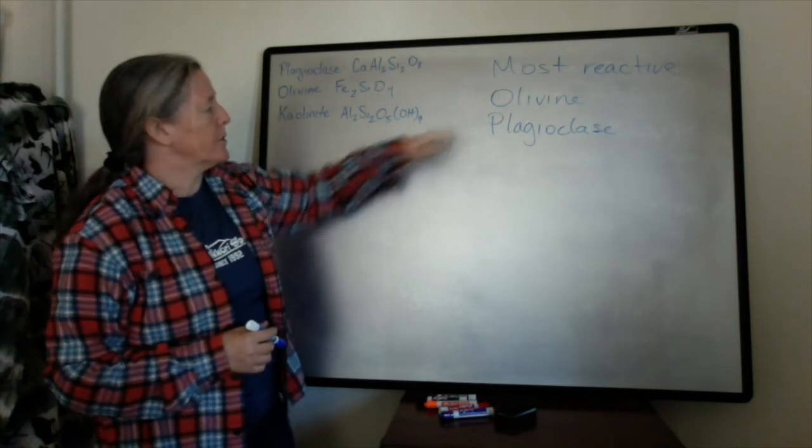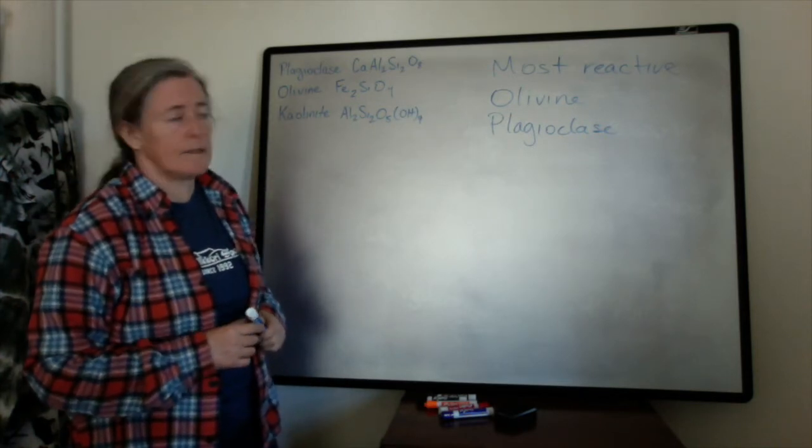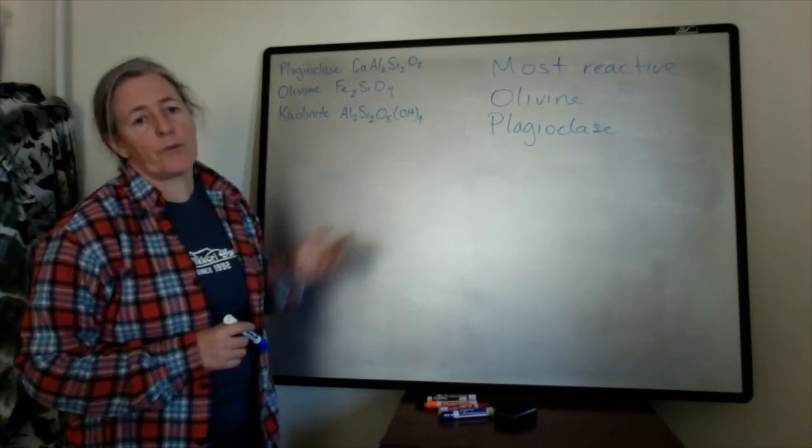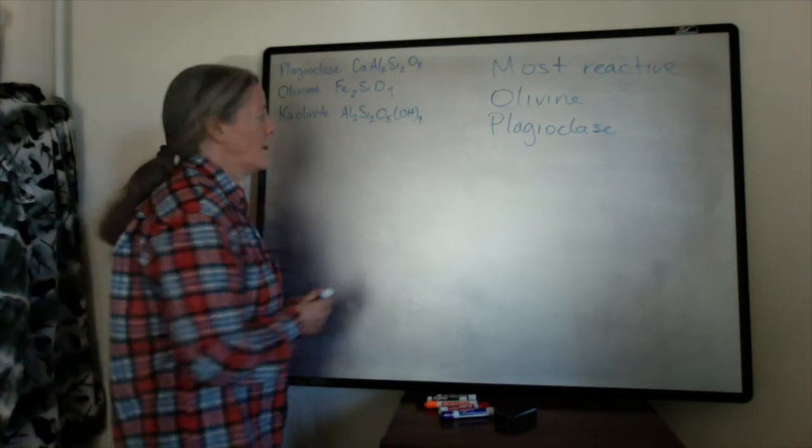So I want to talk about the alteration of olivine and plagioclase because they both create common alteration mineral products as in clays and oxides.